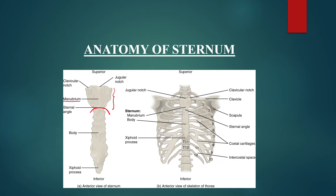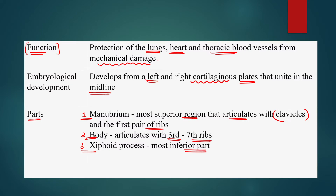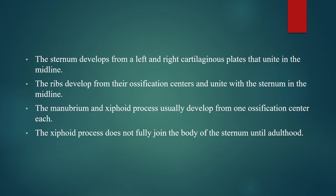This whole upper region is your manubrium, where the clavicle attaches and the first couple of ribs articulate. This middle structure is your body, and this small structure at the bottom is your xiphoid process. The body joins from the third rib to the seventh rib directly. Ribs develop from their own ossification centers and unite with the sternum in the midline.